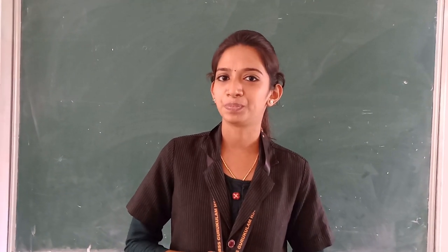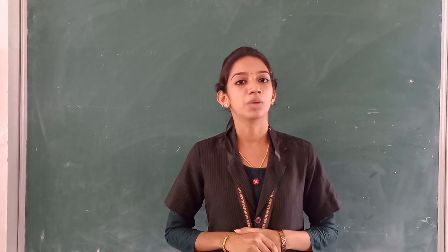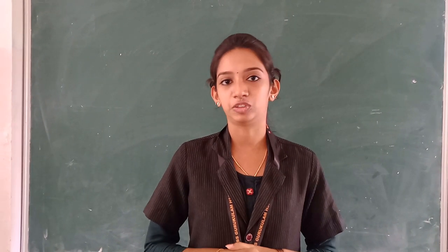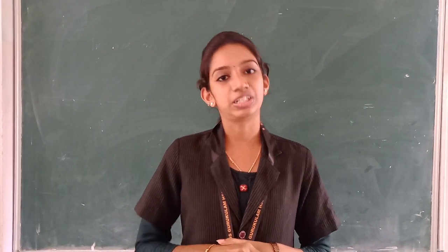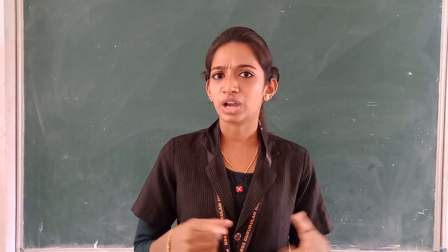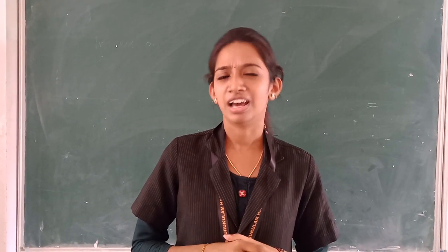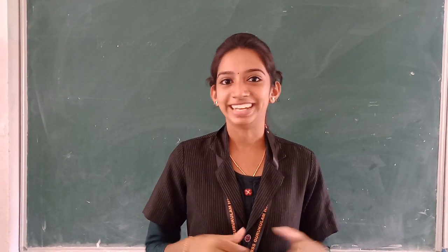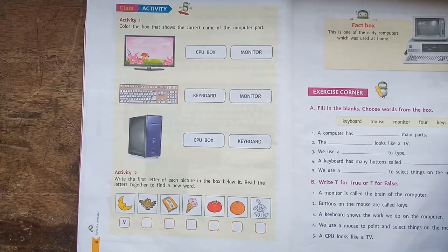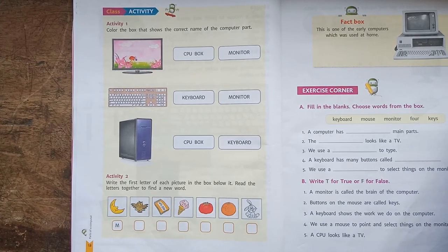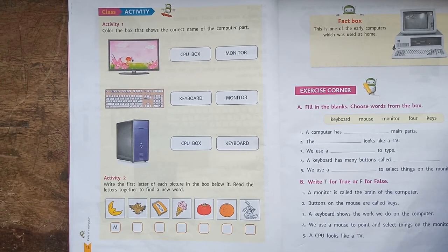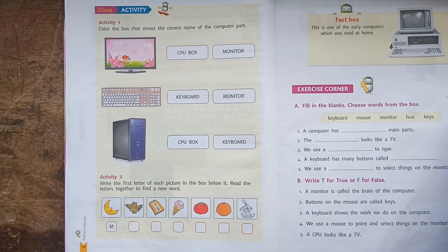Now we can learn new words. So, go and take your pencil and now we can do some activities. Crayons are you going to use? Yes. So, take page number 18, class activity. Activity 1: color the box that shows the correct name of the computer parts.